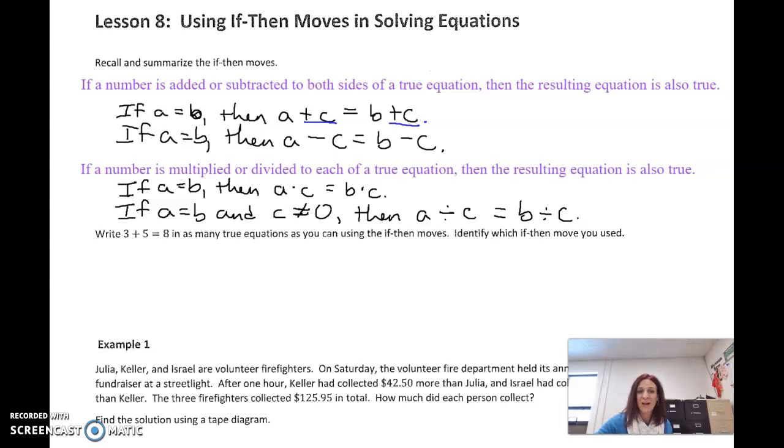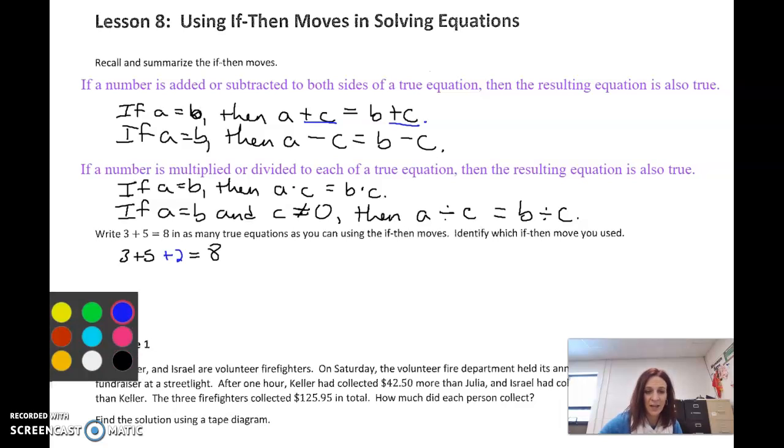The problem says write 3 plus 5 equals 8 as many true statements as you can using the if-then moves. So if I go 3 plus 5 and then I add 2 to it, 3 plus 5 is 8 plus 2 is 10. What happens if I add 2 to 8? You get 10. That's these if-then moves.